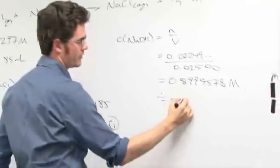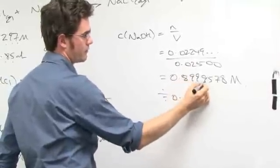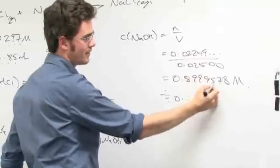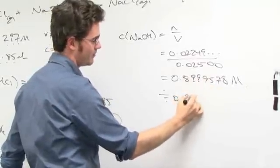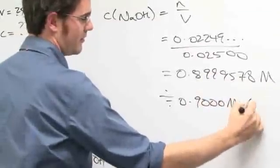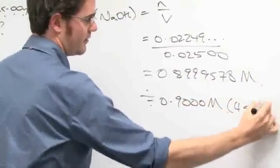So, what happens to it? The 9 becomes 9000 M, rounded to 0.9000 M with 4 sig figs.